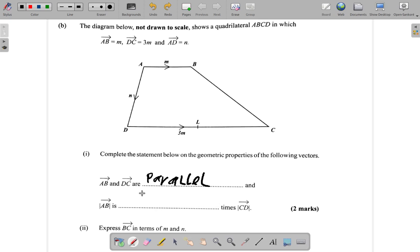It's one-third. Because here it says CD is 3M and AB is M. That means CD is three times longer than AB. So AB is one-third CD. So that's what I have here.